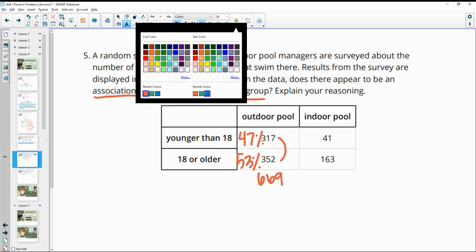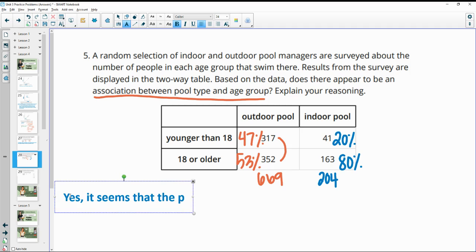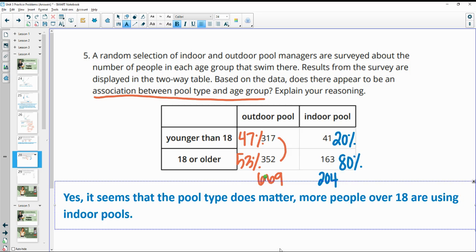Versus here, if we add these together for the indoor pool, we have 204 people here and 41 divided by 204 gives you 20% of people at indoor pools are under 18. And then 163 over 204 gives you 80% of people are over 18. So yes, it seems that the pool type does matter. More people over 18 are using indoor pools. Or you could say it seems like less people under 18 are using indoor pools. But here it's about the same amount. It's split pretty close to 50-50. But then here, four times as many people over 18 are using the indoor pool.